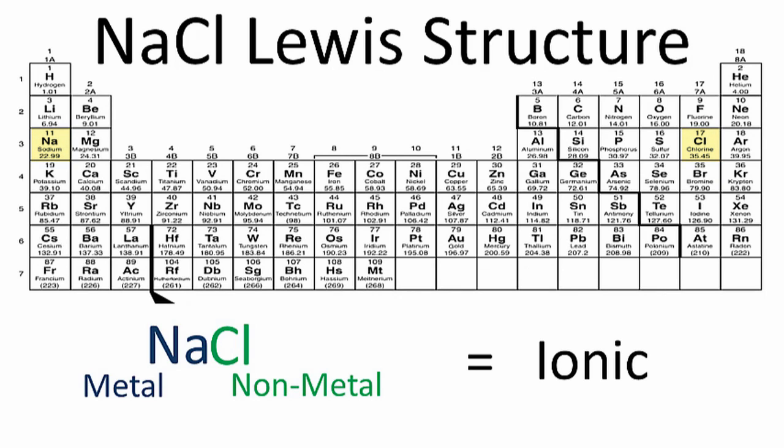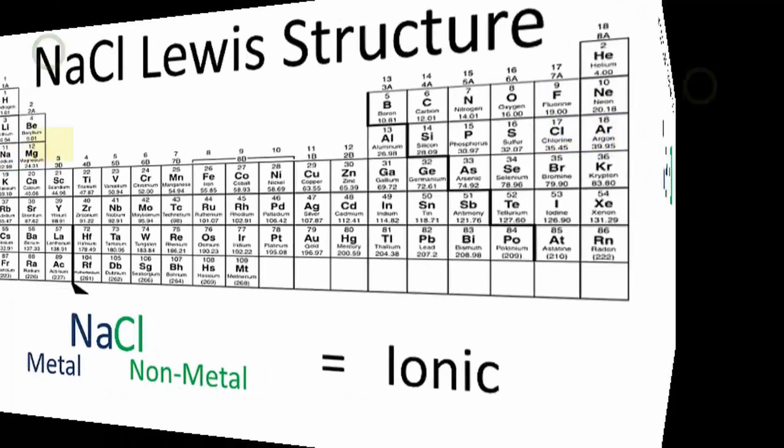Ionic compounds transfer electrons when they form chemical bonds. We also need to know that sodium is in group 1 or 1a and it has one valence electron. Chlorine, in group 17 or 7a, has seven valence electrons.